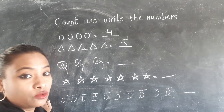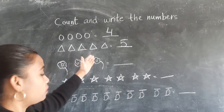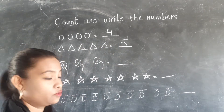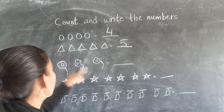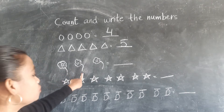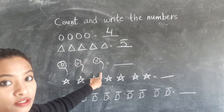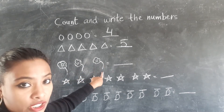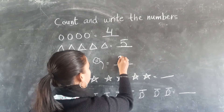Are you getting? Alright? First you have to count, then you have to write. This is flower, yes? So how many flowers are there? 1, 2, 3. Again, 1, 2, 3. So you have to write here.